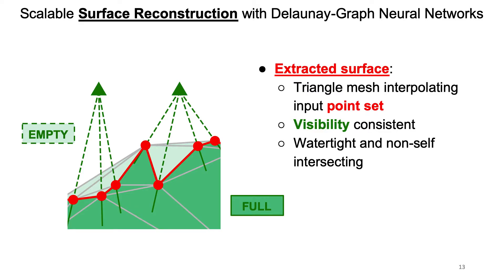This allows us to extract the surface as the interface between all empty and full tetrahedra. The extracted surface is a triangle mesh interpolating the input point set, it is visibility consistent, and it is watertight and non-self-intersecting.